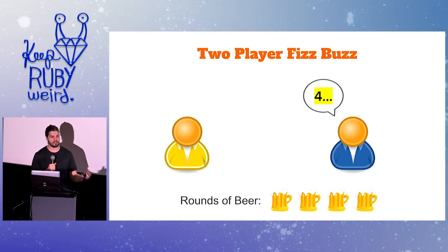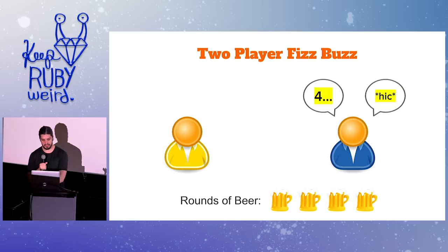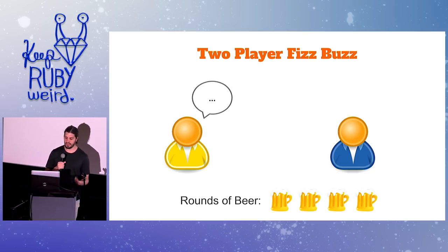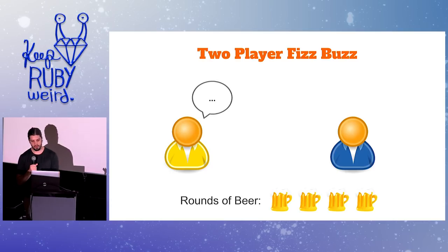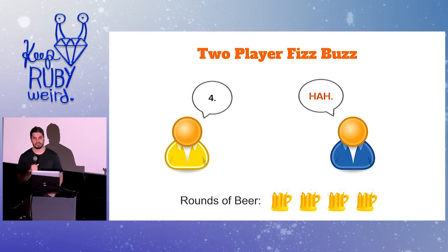Player two finally resumes the challenge and musters up her best four. And now player one is forced to get the next one correct. But unfortunately, four rounds in, player one fails. Miserably.